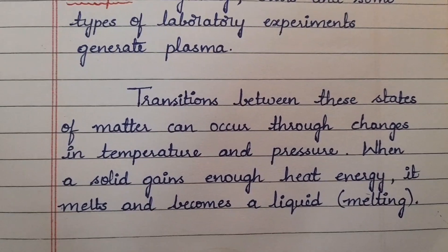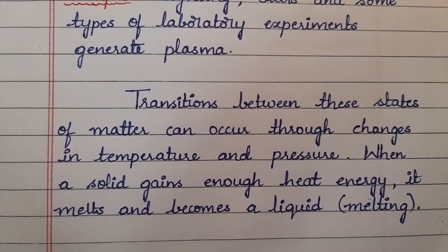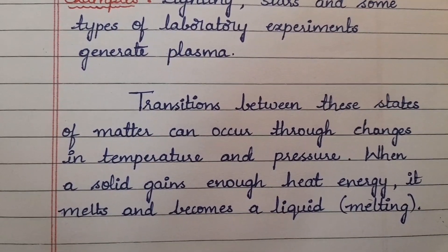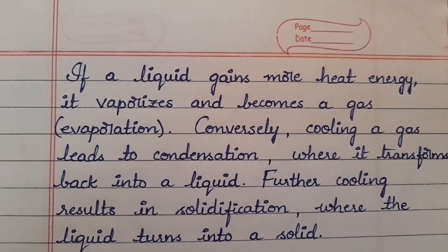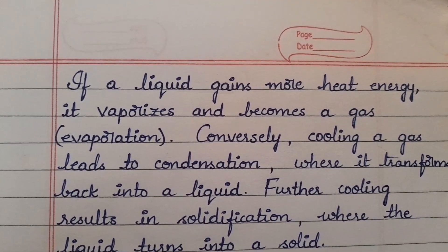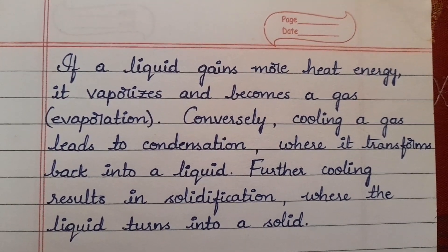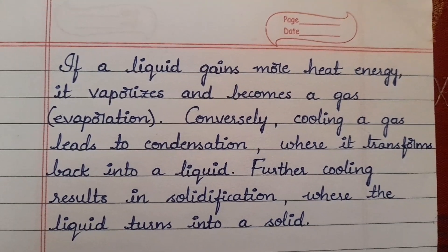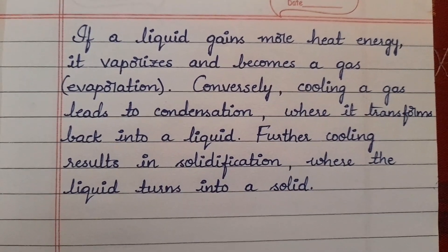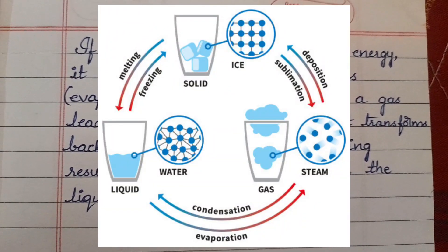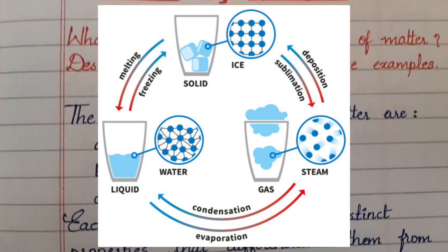Transitions between these states of matter can occur through changes in temperature and pressure. When a solid gains enough heat energy, it melts and becomes a liquid. If a liquid gains more heat energy, it vaporizes and becomes a gas — that is known as evaporation. Conversely, cooling a gas leads to condensation, where it transforms back into a liquid. Further cooling results in solidification, where the liquid turns into a solid.